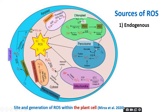Sources of reactive oxygen species can be either endogenous or exogenous. Endogenous means produced within the plant cell. Chloroplasts, peroxisomes, and mitochondria are the major organelles that produce ROS in a plant cell, and ROS are also produced in the plasma membrane. Some ROS are also produced in the glyoxysome, endoplasmic reticulum (ER), and cytosol. For instance, during photosynthesis in the chloroplast, some ROS are produced; in the peroxisome during the glyoxylate cycle; and in the mitochondria from the electron transport chain.